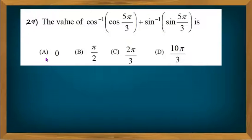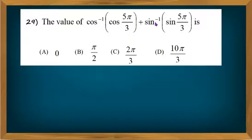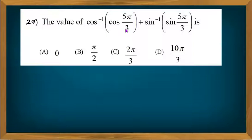Consider this question: the value of cos⁻¹(cos(5π/3)) + sin⁻¹(sin(5π/3)). To solve this, you have to bring the angle 5π/3 into the range of cos⁻¹(x), that is between 0 to π, so that you can apply the identity cos⁻¹(cos x) = x.